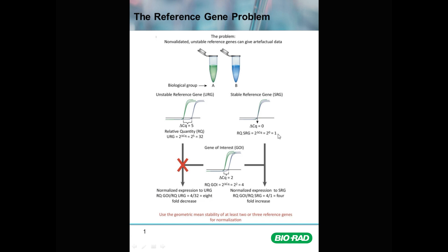If the gene of interest gives a delta CQ of two between the control and treated sample — a four-fold difference, two to the power of two — then when normalized to the unstable reference gene, four divided by 32 results in an eight-fold decrease. This would be the normalized expression difference for the gene of interest relative to the unstable reference gene. Whereas if we use the stable reference gene, four divided by one results in a four-fold increase in gene expression when normalized to the appropriate reference gene.